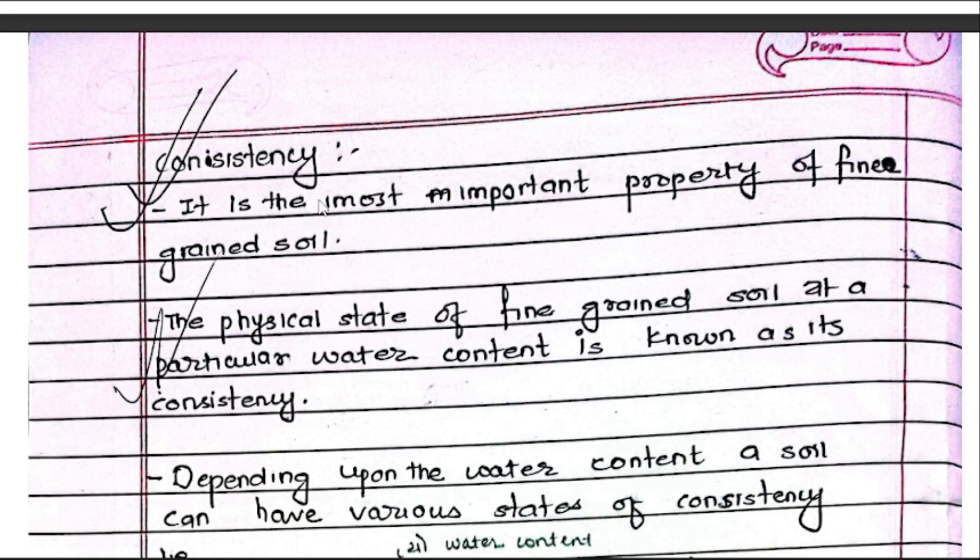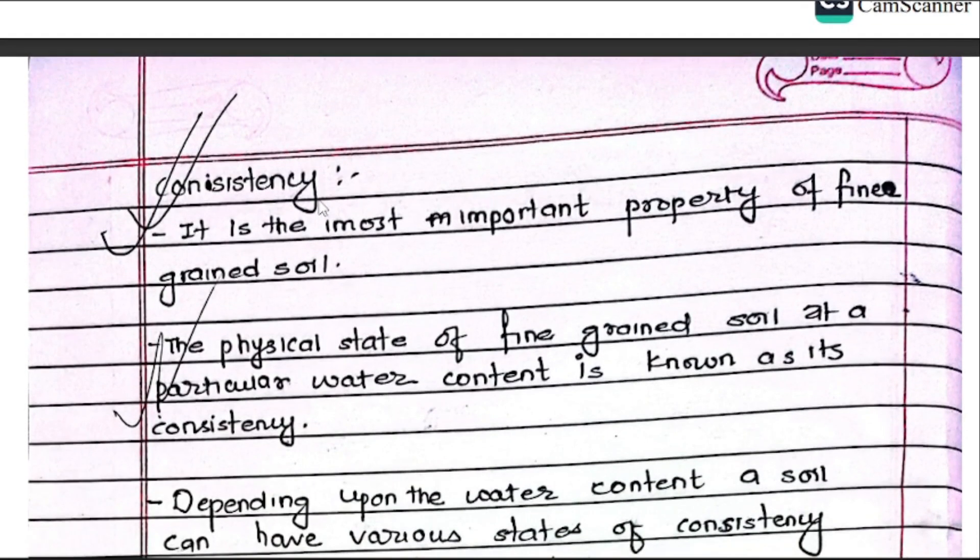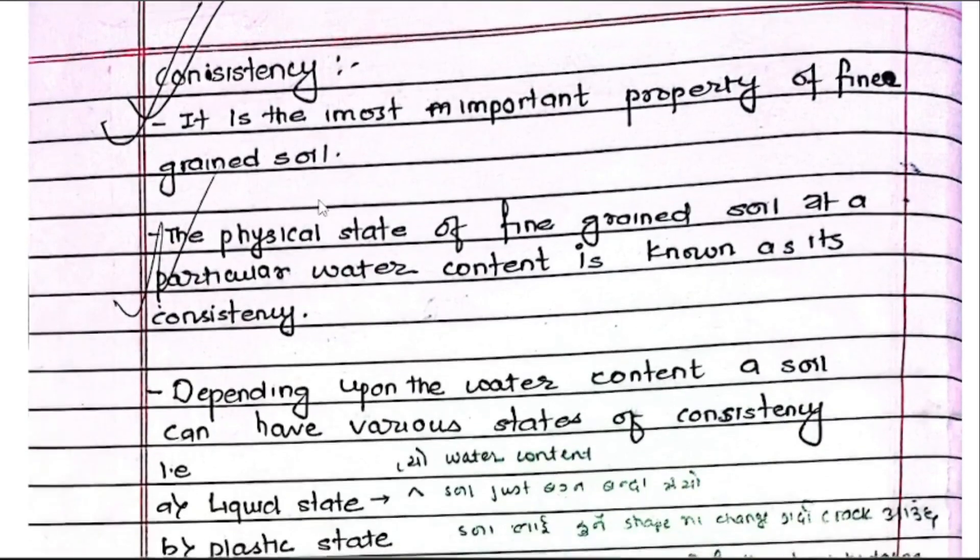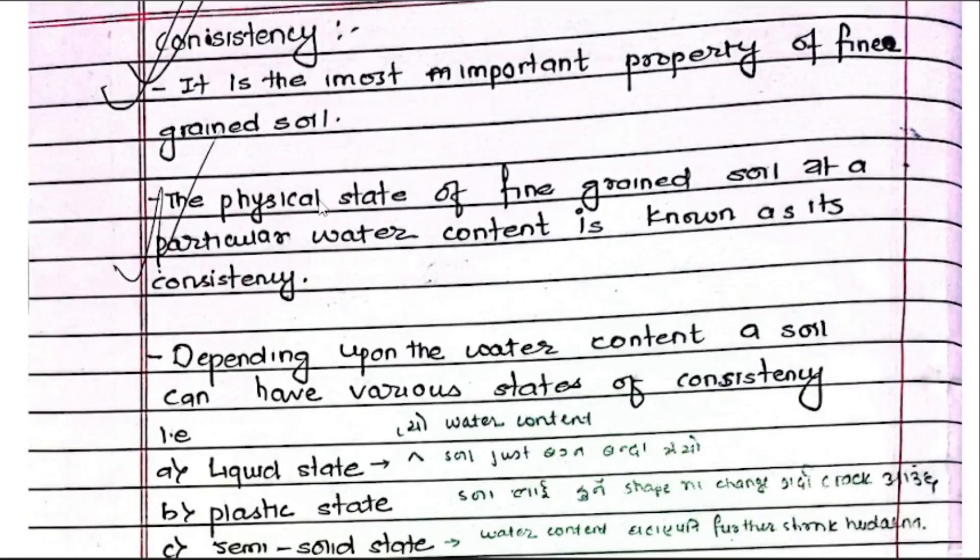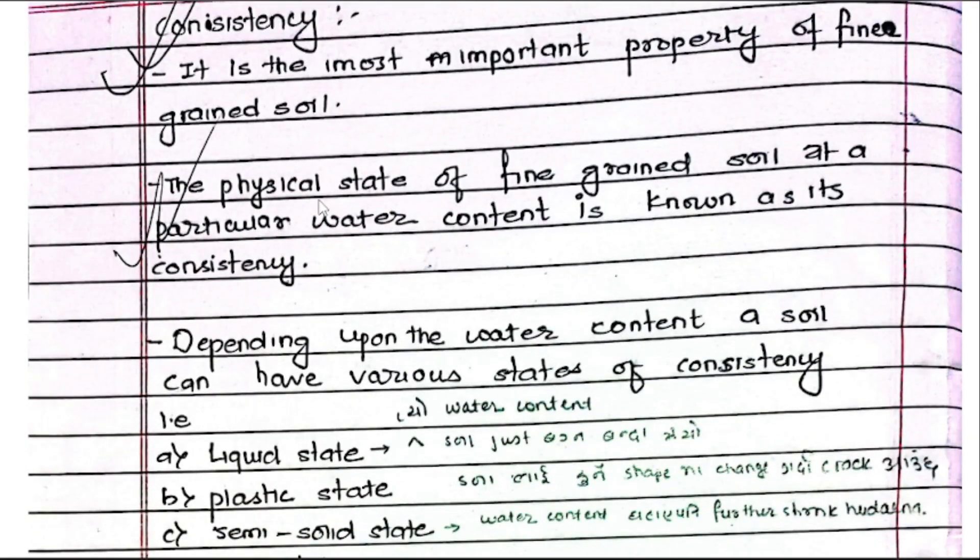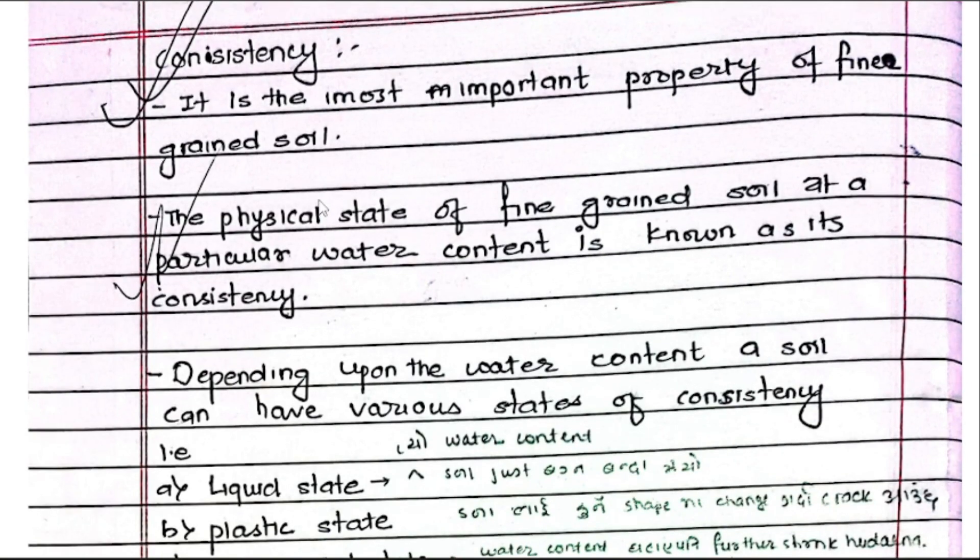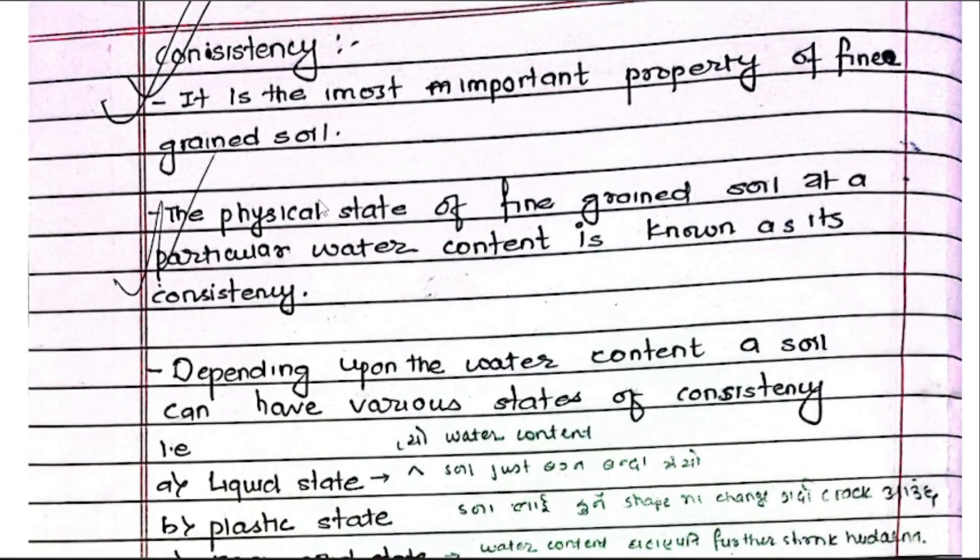It is the most important property of fine-grained soil. The physical state of a fine-grained soil at a particular water content is known as its consistency. The consistency is simply the physical state of the fine-grained soil at a particular water content.